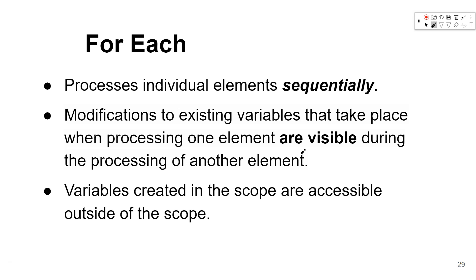Each iteration has information about what has happened to the variable in the previous iterations — it knows the most recent value. Also, another property of For Each that makes it suitable for such applications: variables created inside the For Each scope are accessible outside of the scope, which makes it the right approach to iterate over a collection and add each element to our variable.